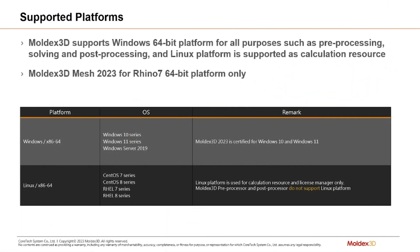To start off, we have a couple of compatibility changes. For Windows systems, we are only supporting Windows 10 and on, so any older versions like Windows 7 need to be upgraded. Linux will utilize the CentOS 7 and 8 series as well as RHEL 7 and 8 series. MoldX3D Mesh 2023 will only be available for Rhino 7, so no more Rhino 5 or Rhino 6 — we must be using Rhino 7, and that will be what's downloaded through the default installation package.